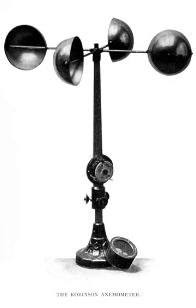Furthermore, since the wind varies in direction and the axis has to follow its changes, a wind vane or some other contrivance to fulfill the same purpose must be employed. A vane anemometer thus combines a propeller and a tail on the same axis to obtain accurate and precise wind speed and direction measurements from the same instrument. The speed of the fan is measured by a rev counter and converted to a wind speed by an electronic chip. Hence, volumetric flow rate may be calculated if the cross-sectional area is known.